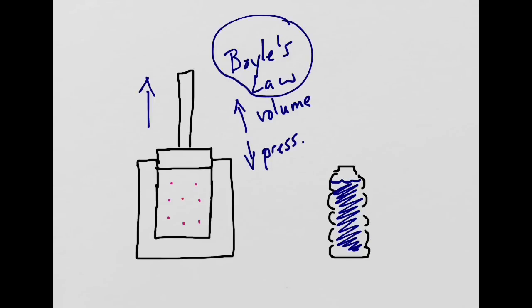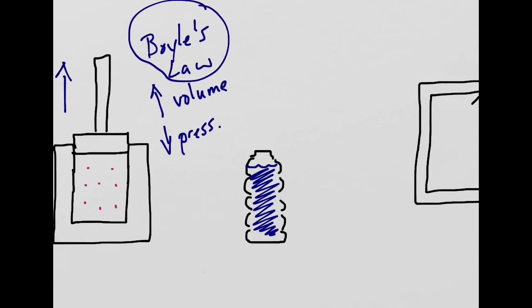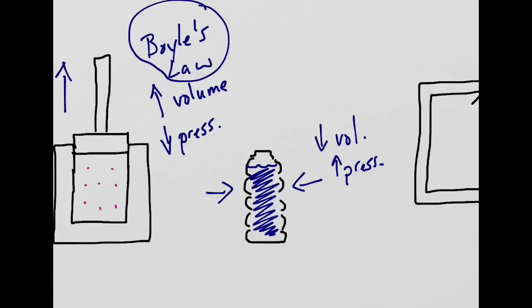Using Boyle's Law on this water bottle, if I increase the pressure on the outside — I make the box smaller — which increases the fluid pressure on the inside. If I took the cap off the top, that pressure would cause the water to fly out.